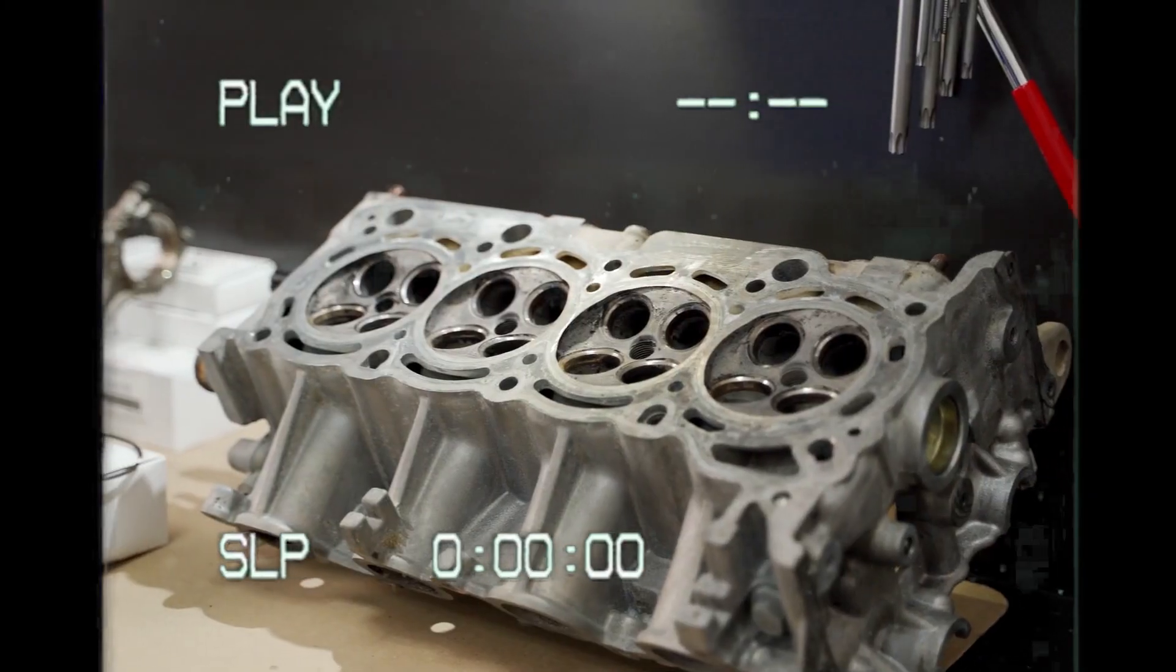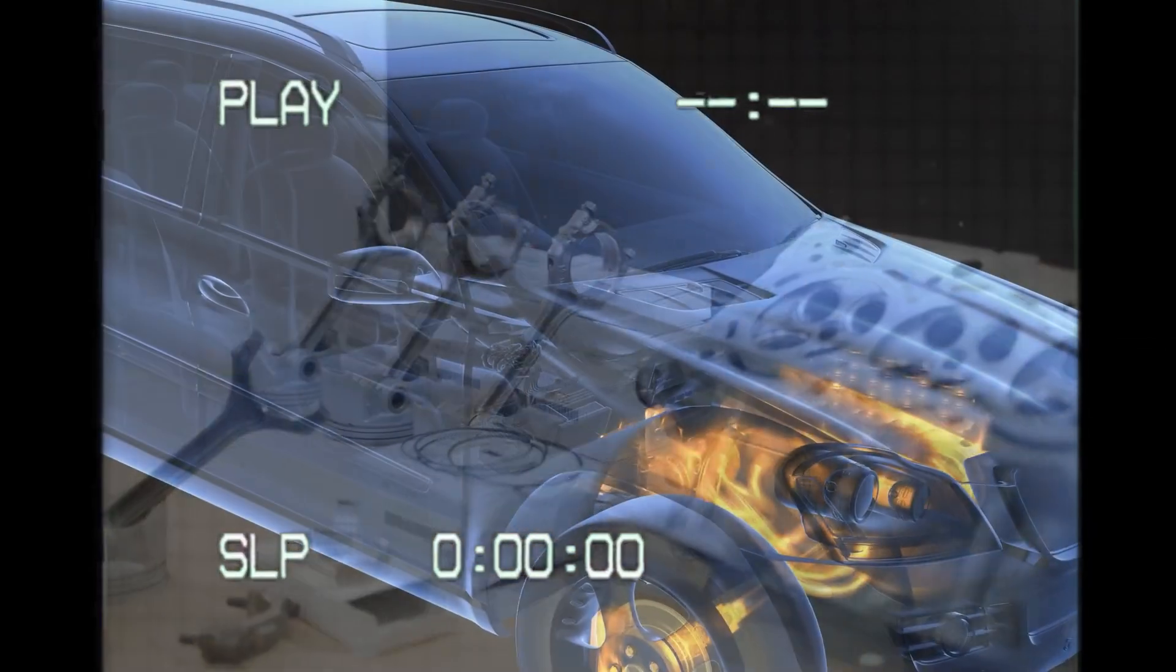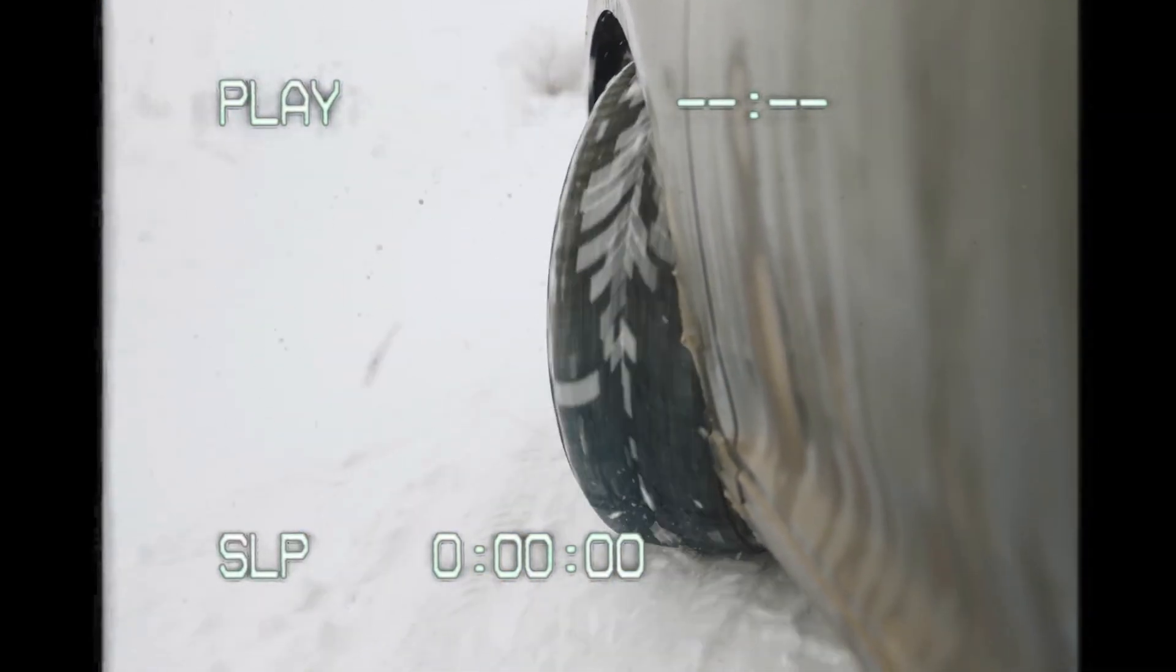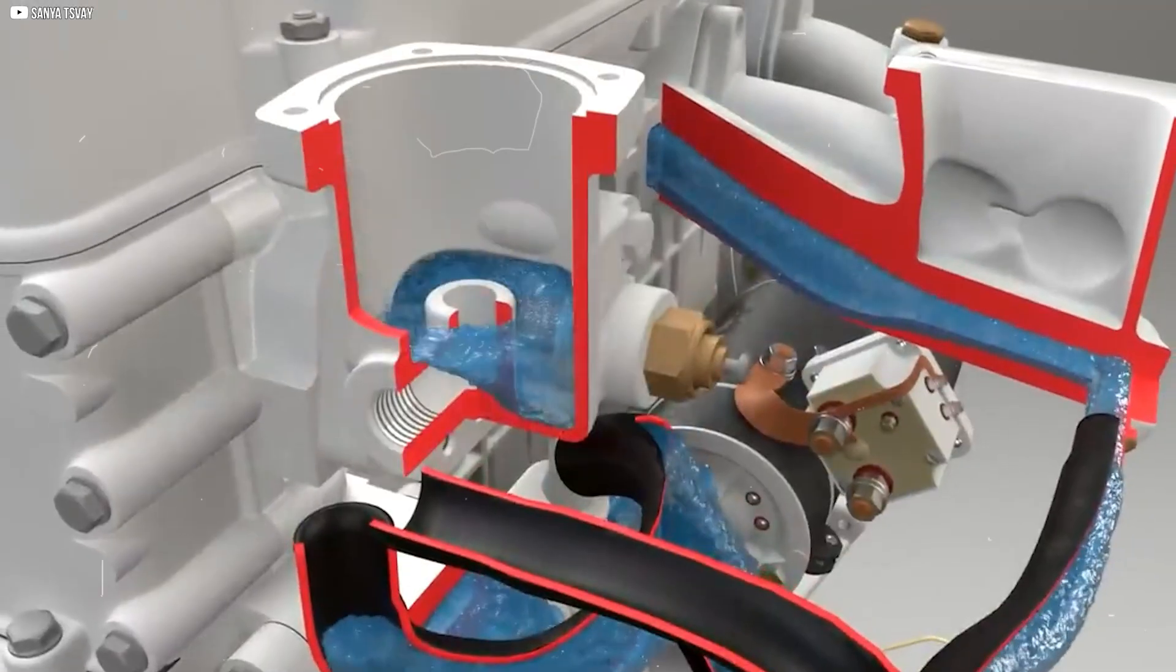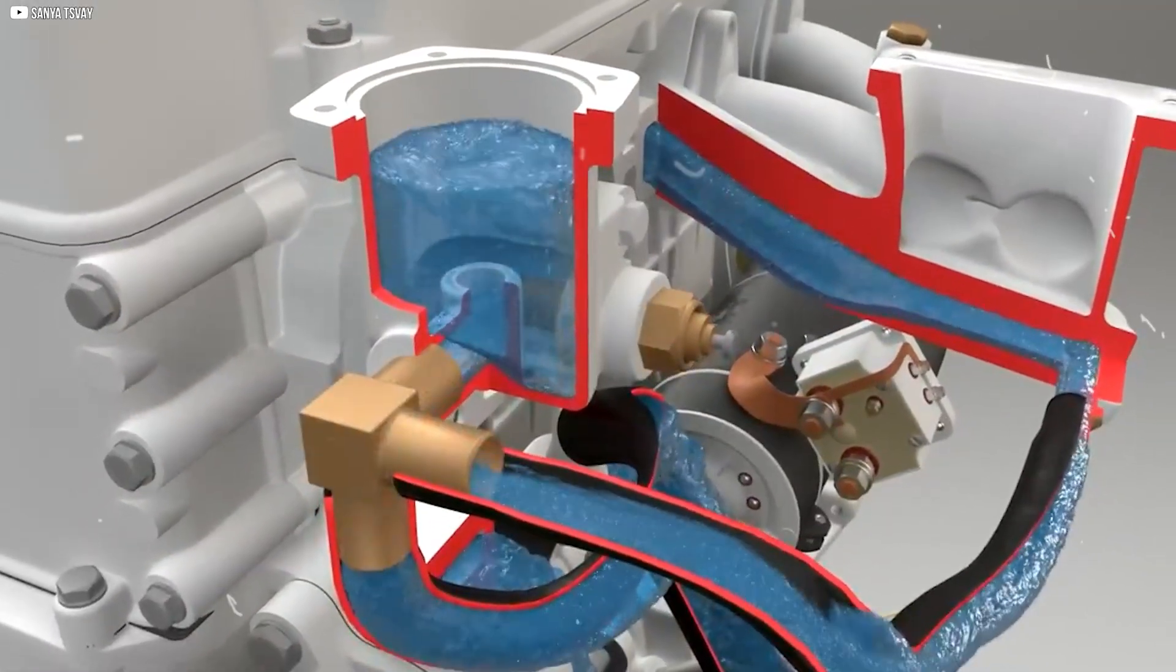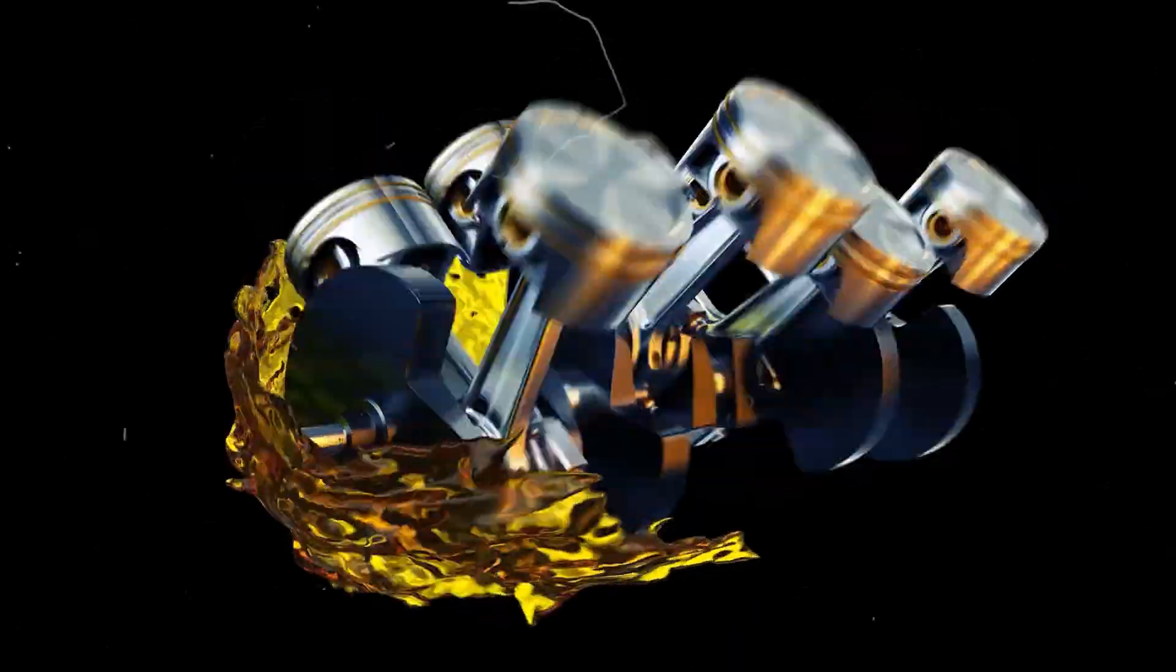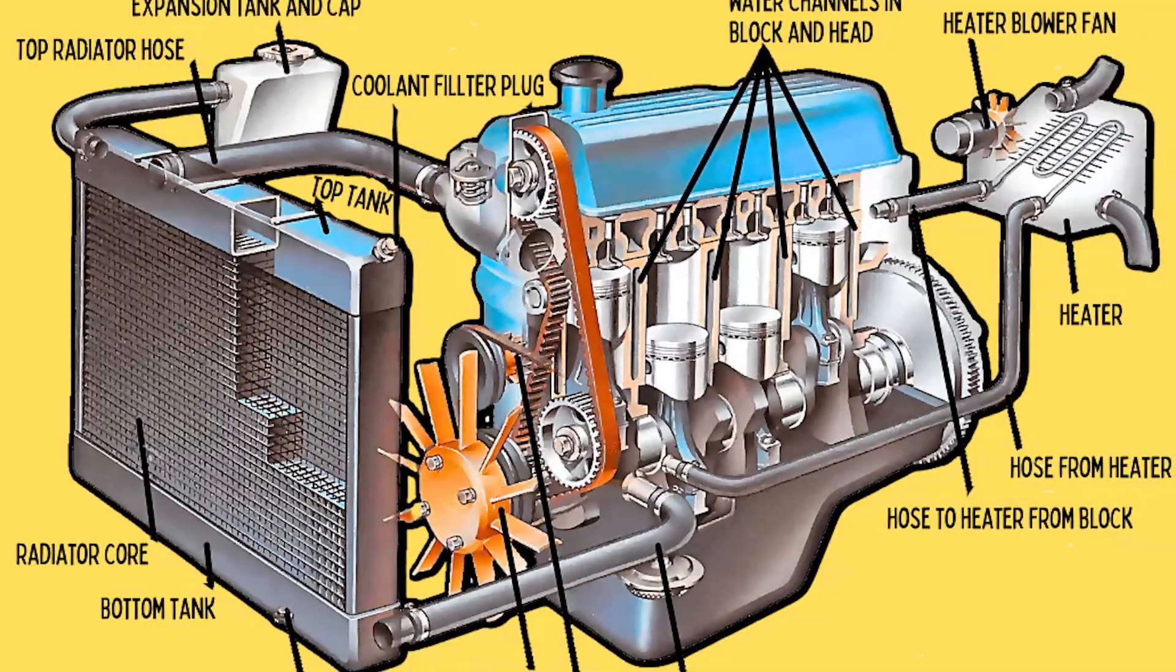From here, part of the fluid is directed to warm the intake manifold. This prevents fuel from condensing and helps the engine run smoothly in cold conditions. The rest continues through its hidden tunnels, moving toward the outlet. The journey through the gasket shows how precision design keeps the engine alive.